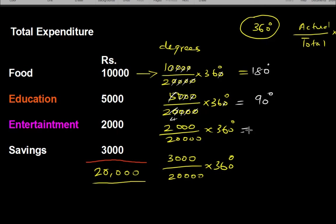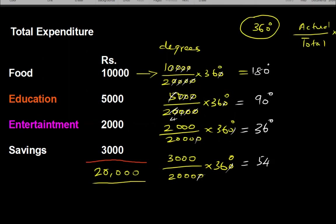So 90 degrees for that category. Similarly, for 2,000 we are getting 36 degrees, and then cancelling the remaining values we get 54 degrees. So our degree values are: 180, 90, 36, and 54 degrees — and we'll use these to construct the pie chart.